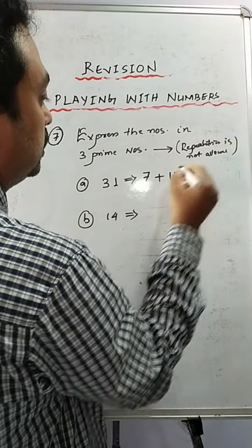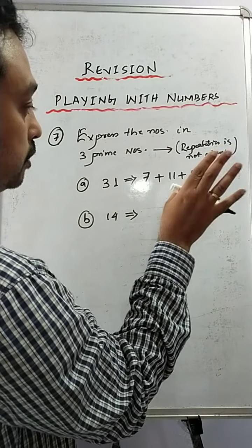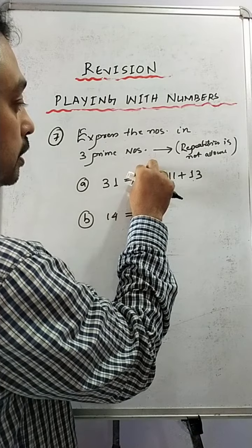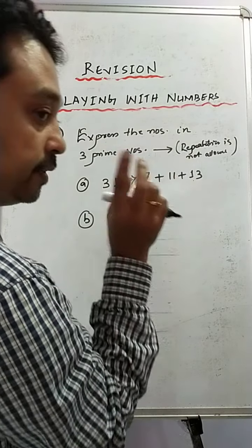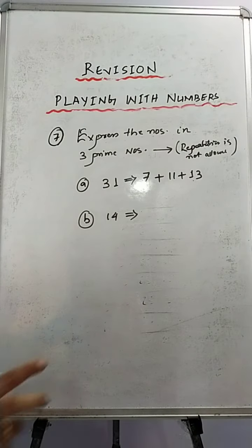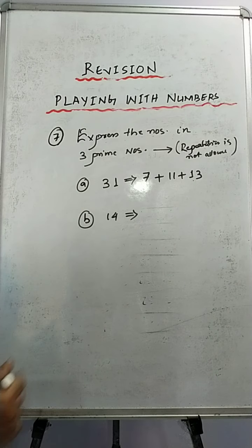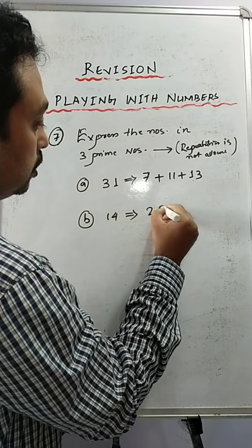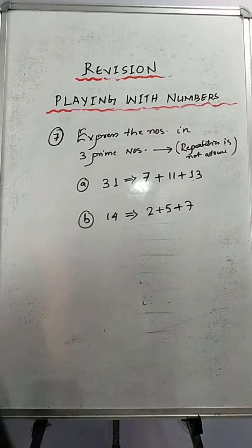That means you cannot write 11, 11, 13, 13 — repetition is not allowed. Only one of each prime number; you cannot repeat the prime numbers. This is a very important thing to remember. Now what about 14? We can write 14 as 2 plus 5 plus 7.